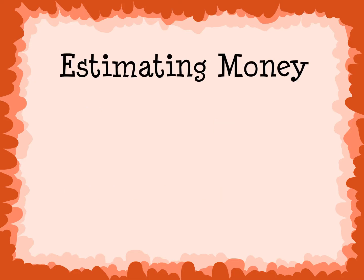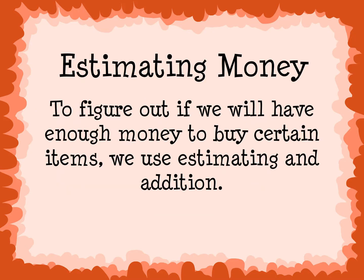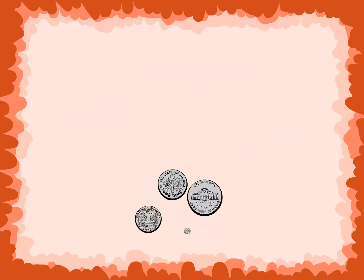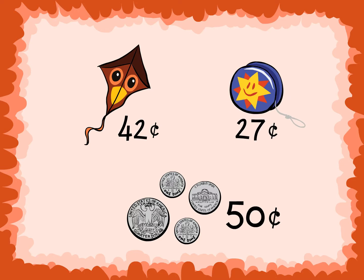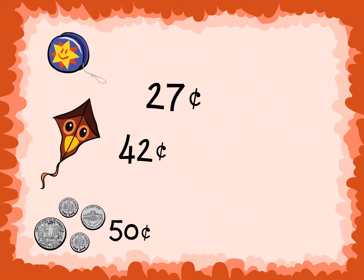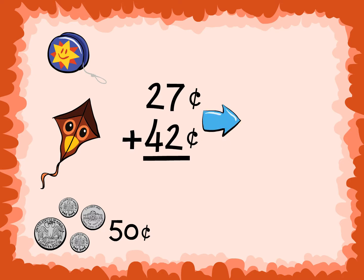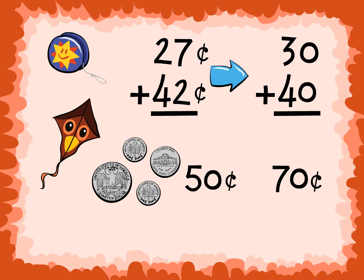Estimating Money: When we estimate with money, we are usually trying to figure out the approximate amount needed to purchase certain items. To figure out if we will have enough money to buy certain items, we use estimating and addition. Joe has 50 cents. He would like to buy a kite and a yo-yo. Does he have enough money to buy these items? The yo-yo is 27 cents, so we round up to 30. And the kite is 42 cents, so we round down to 40. Our estimate is 70 cents, because 30 plus 40 equals 70. Joe has 50 cents, and he needs about 70. Joe does not have enough money to buy these items.